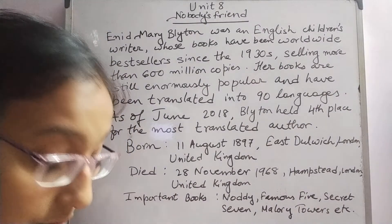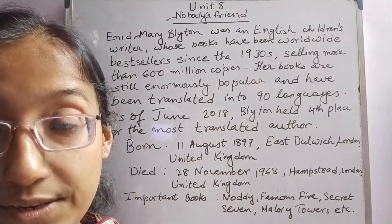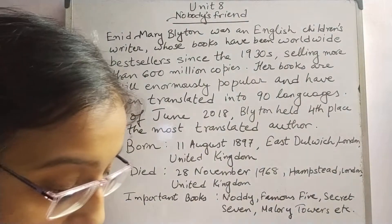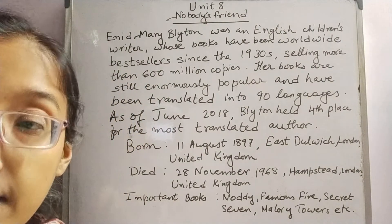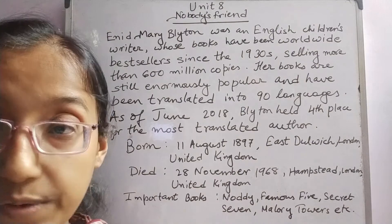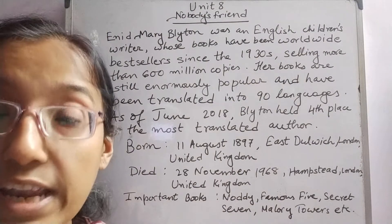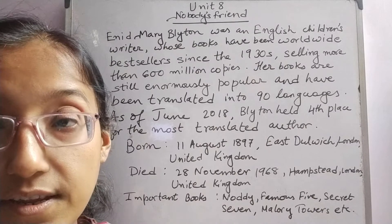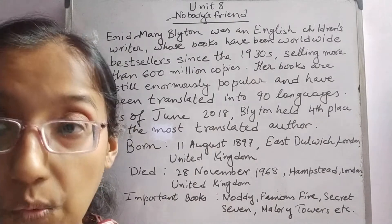Now I will go into the line-by-line explanation. 'She had some sweets that she wouldn't share.' Here we can see there is a girl who has a jar of sweets, but she is not willing to share her sweets with anybody. She wants to eat it all by herself.